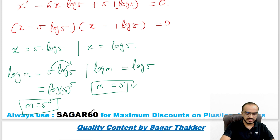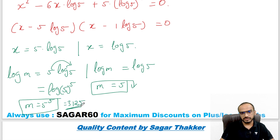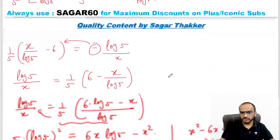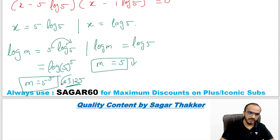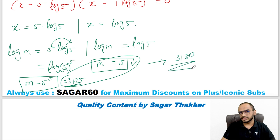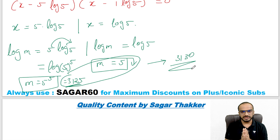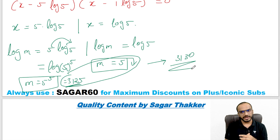5 raised to 5 is 3125. The sum of all possible values of m is 5 + 3125 = 3130. I hope these three questions are clear. If you have any queries you can ask me. Subscribe to the channel and follow me on the academy. My name is Sagar Thakkar — until then, have a good day.